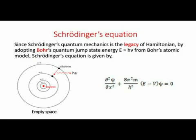This slide shows how Schrödinger's equation was developed. Since Schrödinger's quantum mechanics is the legacy of Hamiltonian, by adopting Bohr's quantum jump state energy E = hν from Bohr's atomic model, as shown on the left-hand side of the slide, Schrödinger's equation is given by the right-hand side equation.